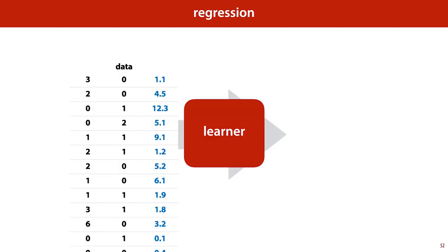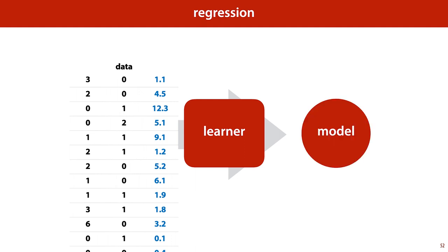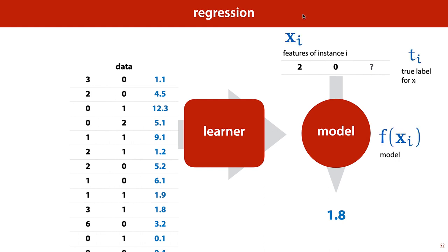Regression works exactly the same as classification, except we're predicting a number instead of a class. That is, the model we're trying to learn is a function from the feature space to the real numbers. To make things more precise, let's introduce some notation. We represent the features of a particular instance i by the vector xi. The corresponding true label, which is given in the data, we call ti.